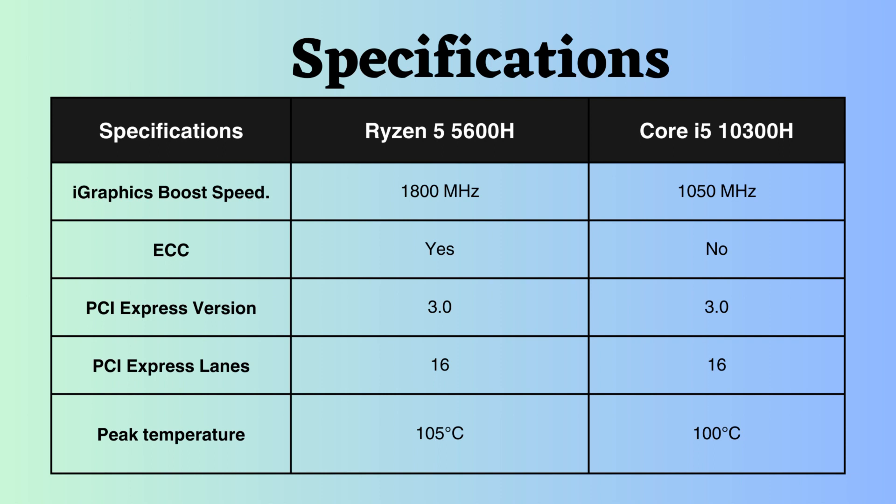The Intel Core 10300H supports a newer PCI version compared to the Ryzen, allowing for more simultaneous data transfers. With more PCI lanes, the Intel processor excels in expanding connectivity and accommodating high-performance components.